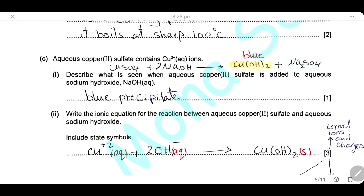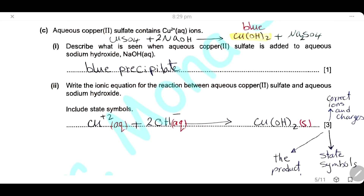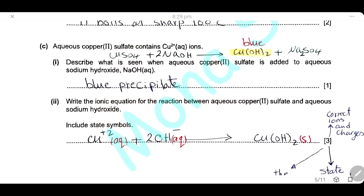Aqueous copper sulfate contains copper ions. When aqueous copper sulfate is added to aqueous sodium hydroxide, a blue precipitate is formed. Copper sulfate reacts with sodium hydroxide to give copper hydroxide, which is the blue precipitate. The ionic equation is: Cu²⁺(aq) + 2OH⁻(aq) → Cu(OH)₂(s).